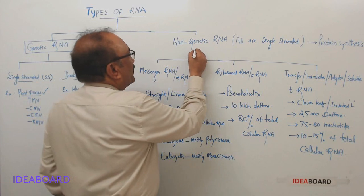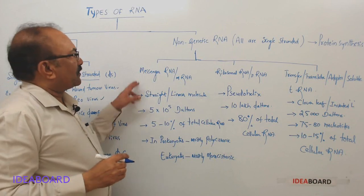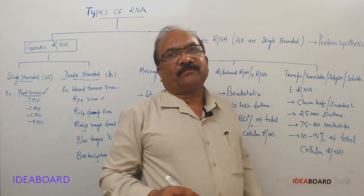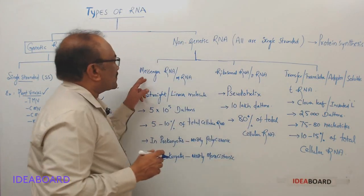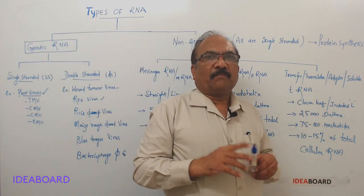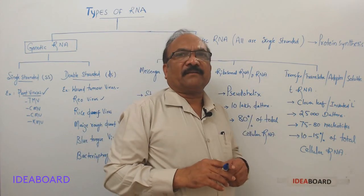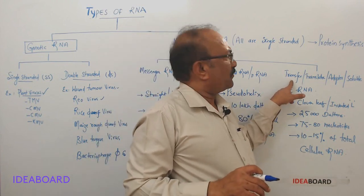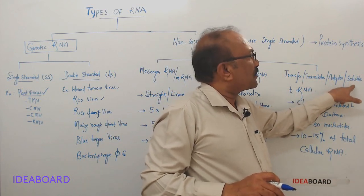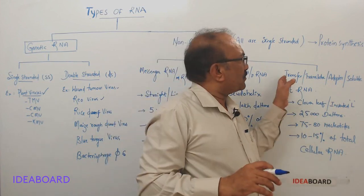We find three types of RNAs here. There is messenger RNA, ribosomal RNA, and transfer RNA, which are generally abbreviated as mRNA, rRNA, and tRNA. You have to remember the alternate names of tRNA: it is called transfer RNA, translator RNA, adapter RNA, as well as soluble RNA. We have to memorize these names.